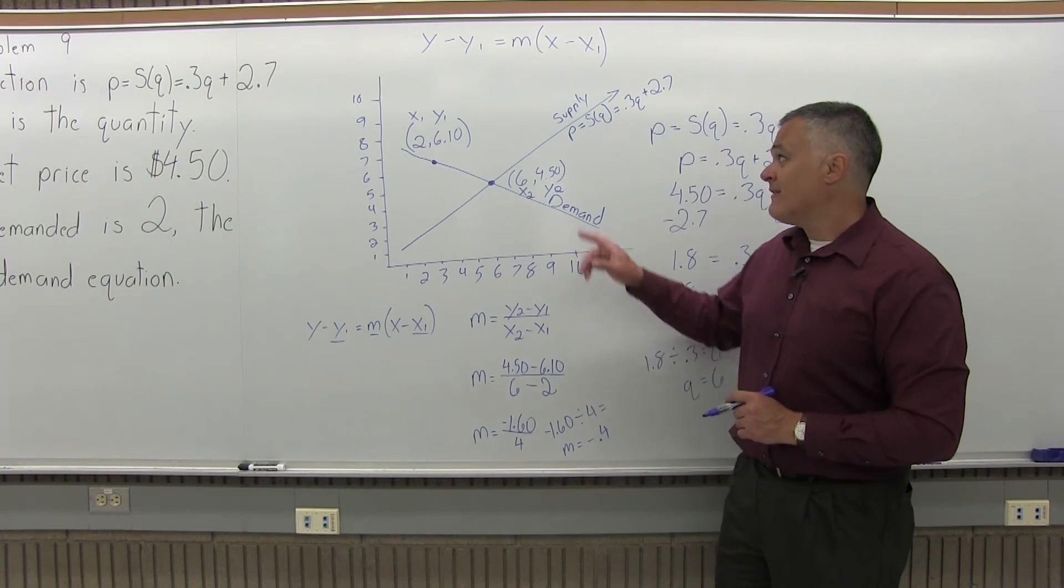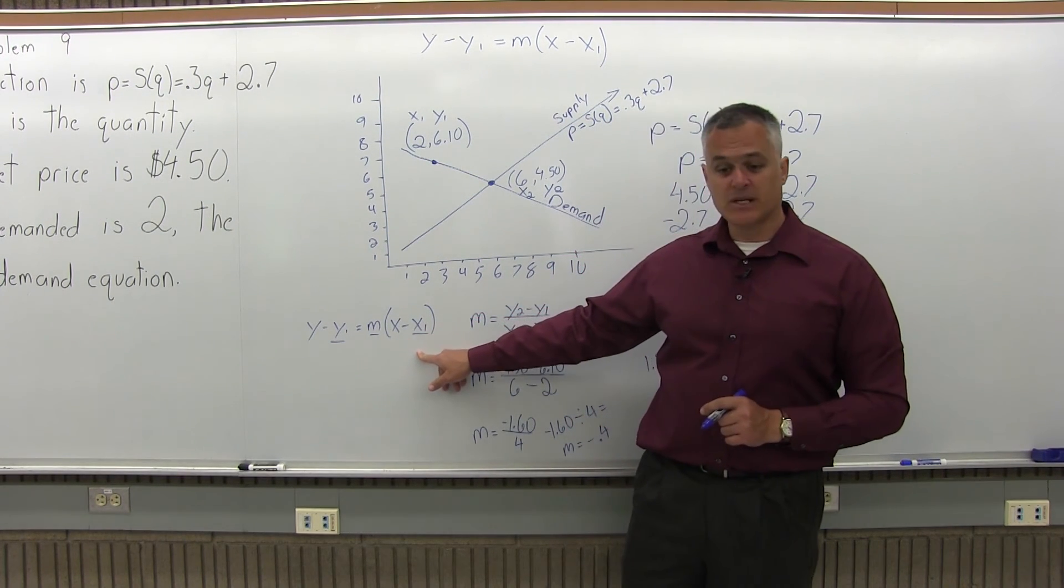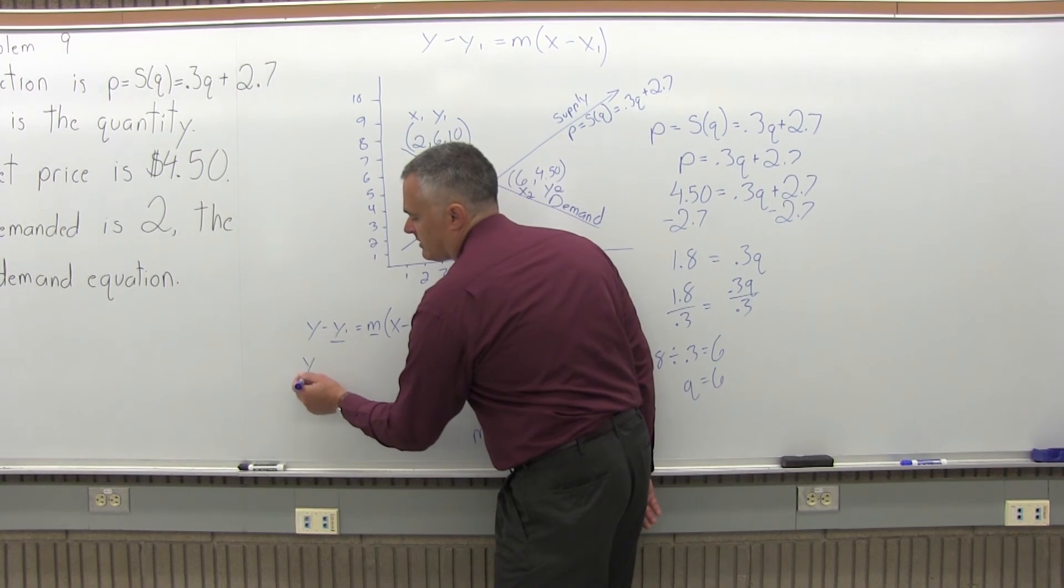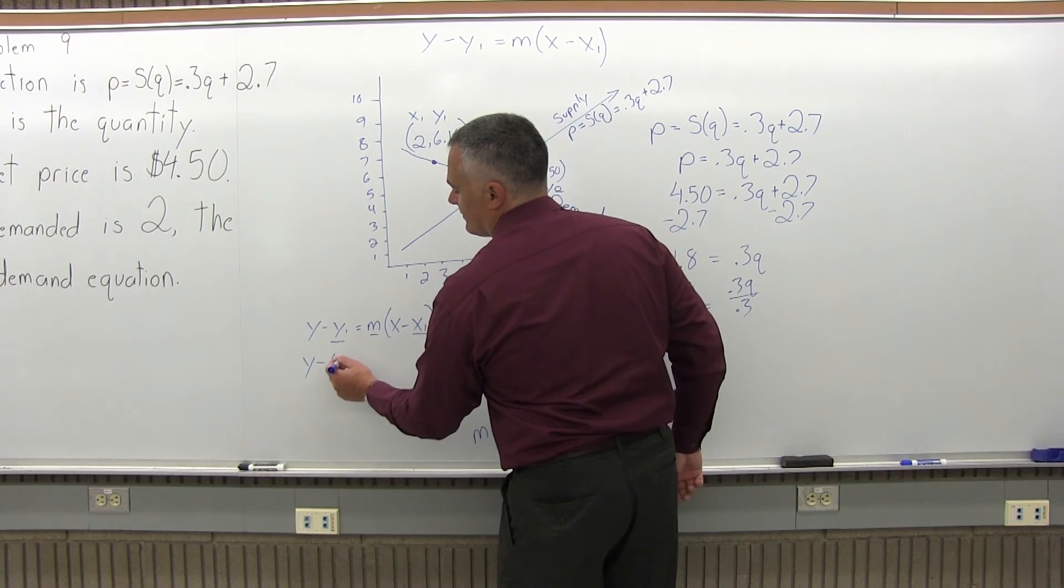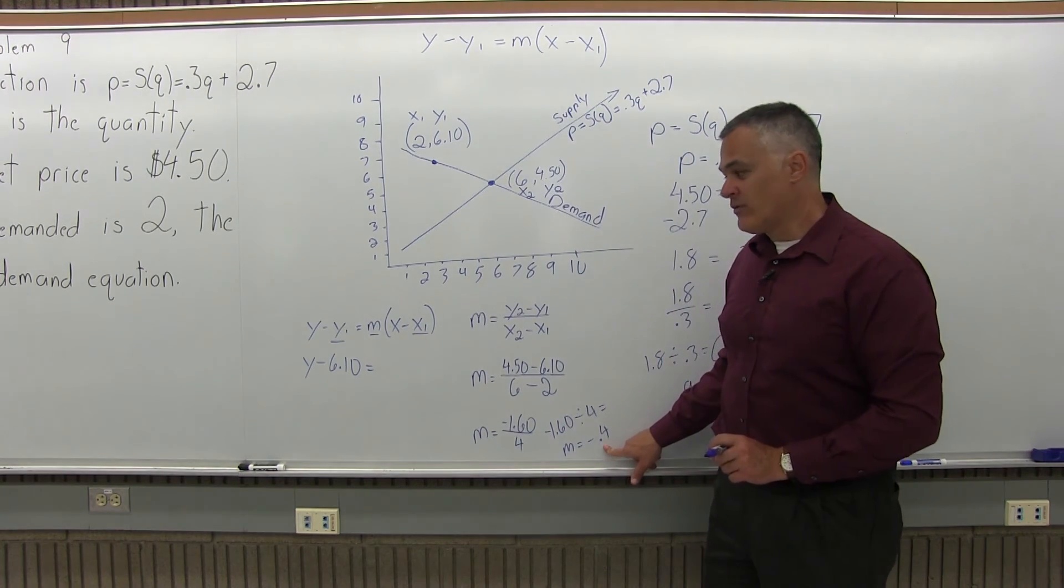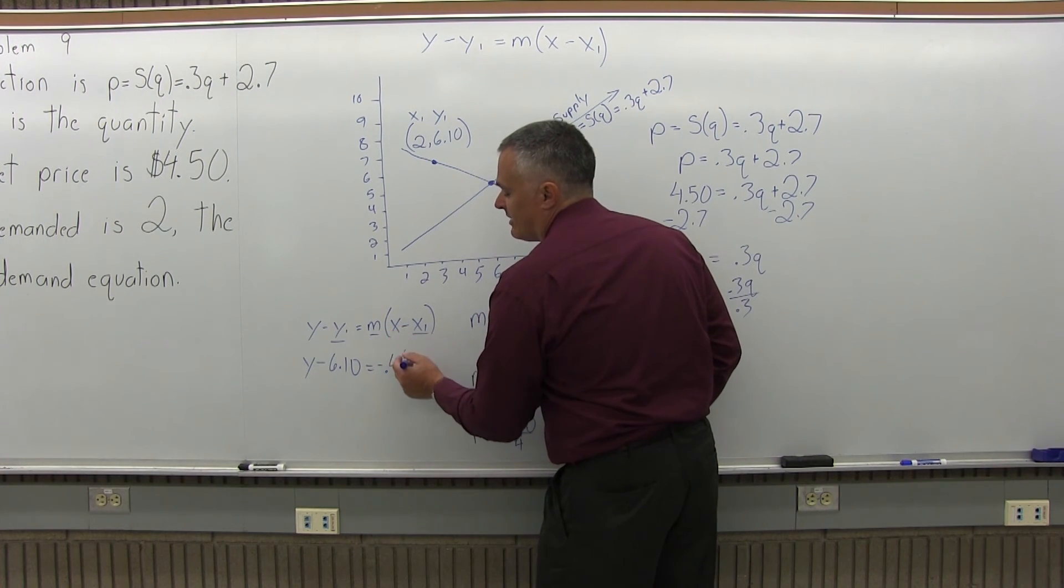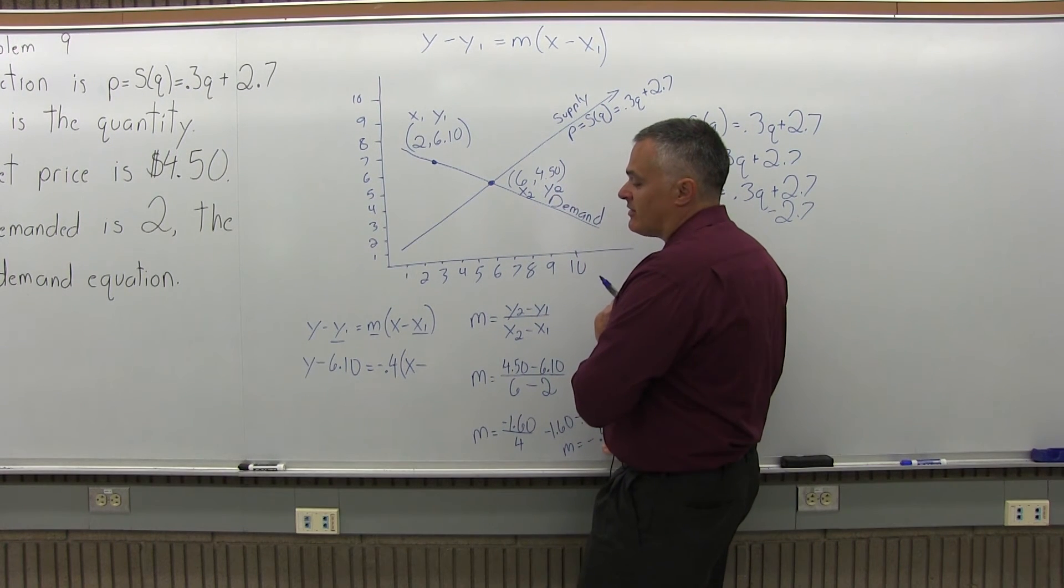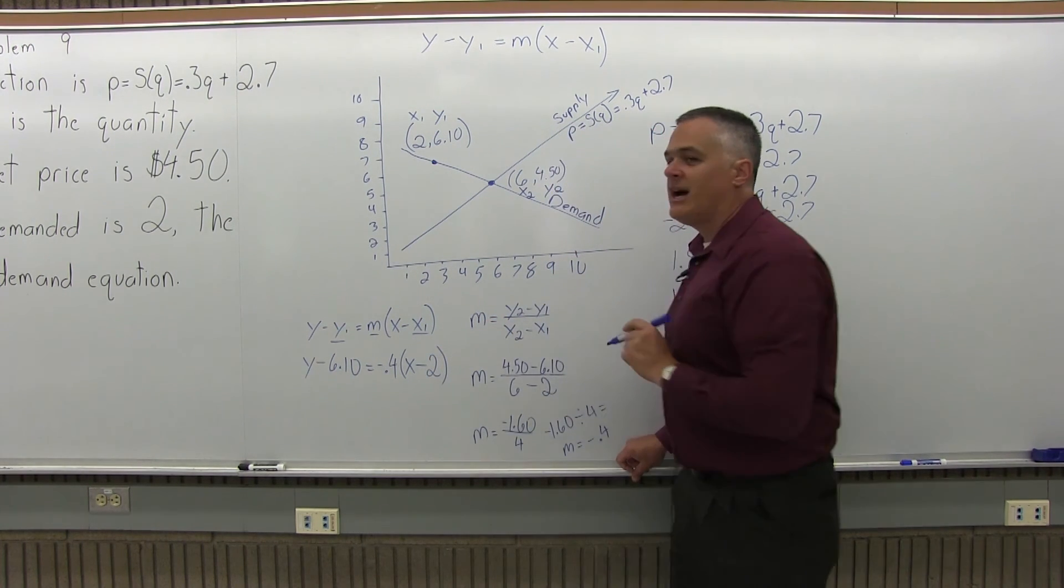Now that I've figured out M and have X1 and Y1 labeled, I'm ready to fill in my formula: Y minus Y1 equals M times X minus X1. Y minus 6.10 equals negative 0.4 times parenthesis X minus 2 close parenthesis. That's the answer, but not in the best form yet.